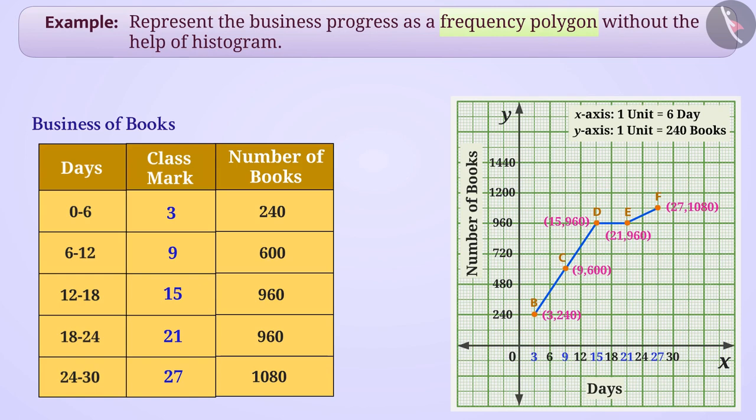We will take an imaginary class interval minus 6 to 0 before class interval 0 to 6 for which we will extend the x-axis in negative direction and the class mark of this class interval will be minus 3. Since books have not been produced in this imaginary class interval, the frequency of this class interval can be taken as 0. Now, we will represent point P on the coordinates minus 3, 0 and connect point P with point B by line segment. This line segment intersects the y-axis at a point which we will call point A.